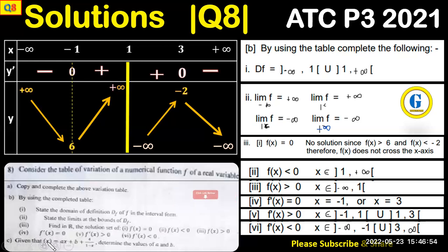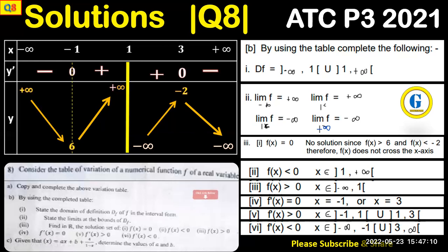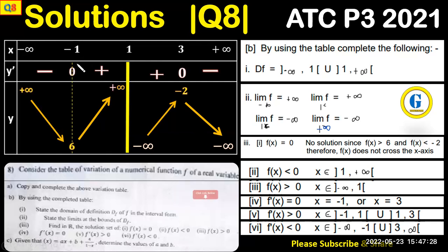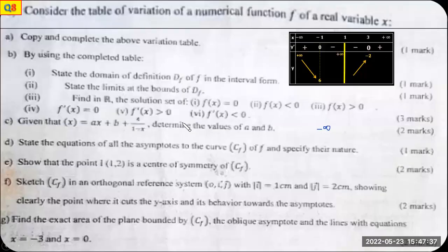Part c states: given that f(x) has the form ax + b + 4 over (1 − x), find the values of a and b. If you need a copy of this paper, click on the link in the description below to download the June 2021 Paper 3 Question 8. To find a and b, we use the turning points: when x = −1, y = 6, and when x = 3, y = −2. We form two equations with two unknowns and solve.